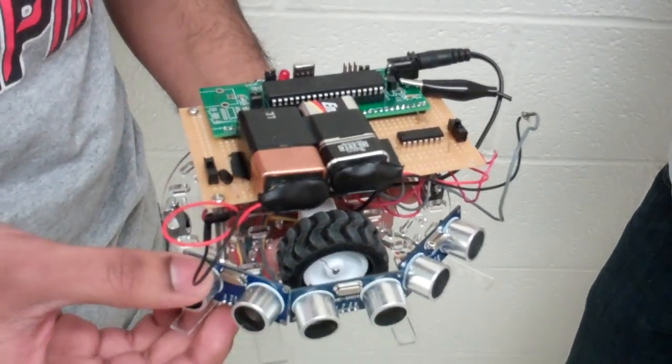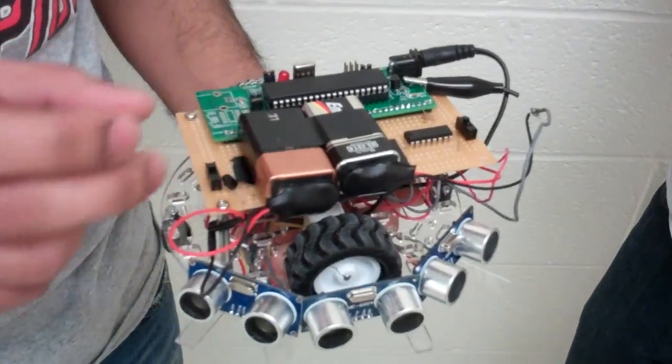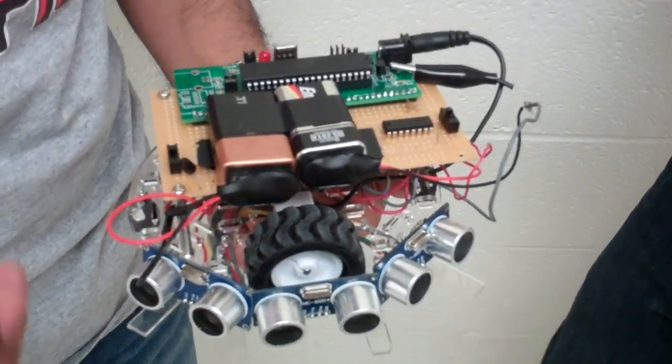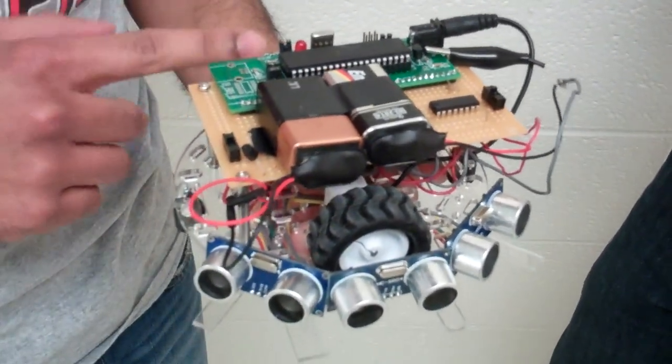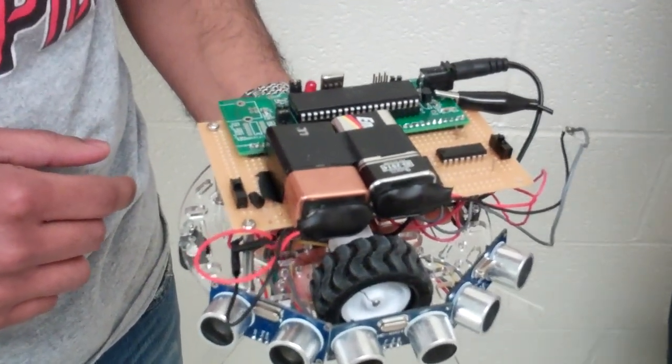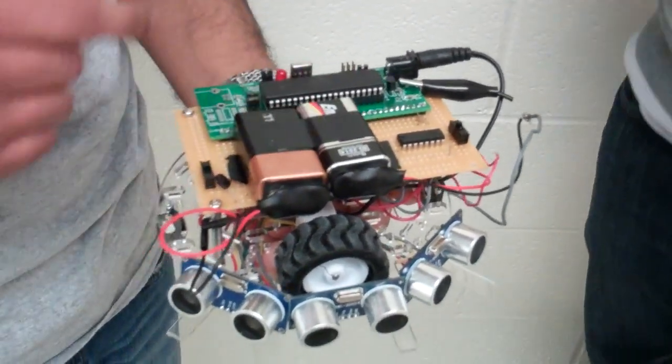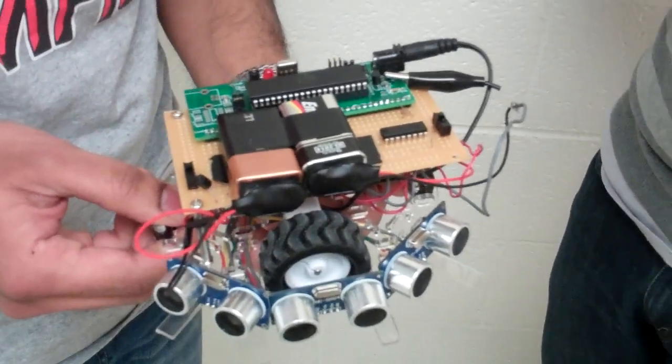Powering the sensors is a nine volt regulated to five. And to get the best performance out of our 30 to one Metal Gear motors, we have a nine volt hooked to it so it's going as fast as possible.